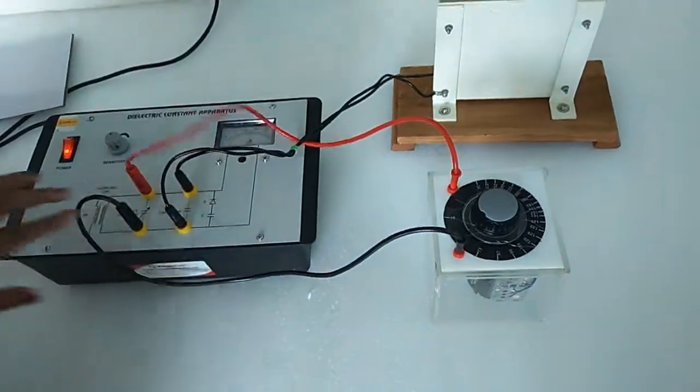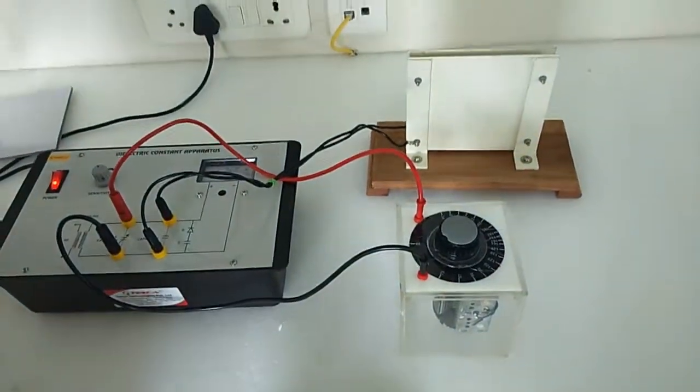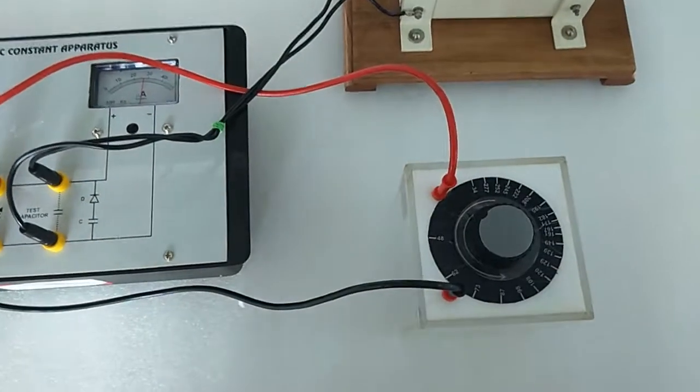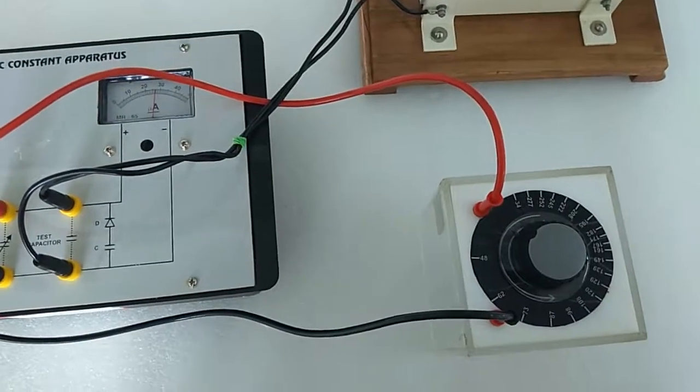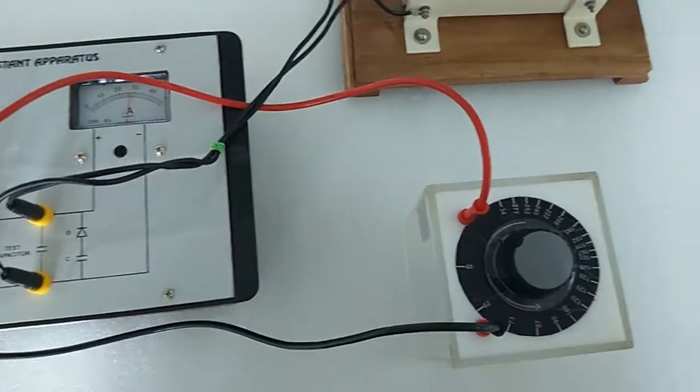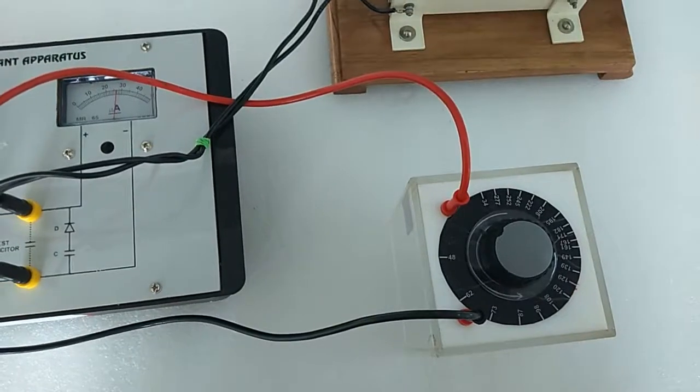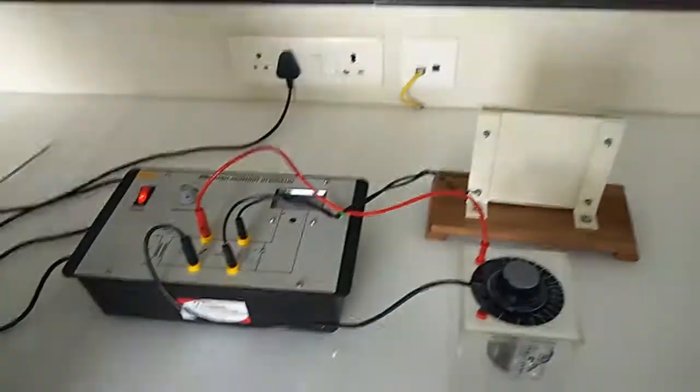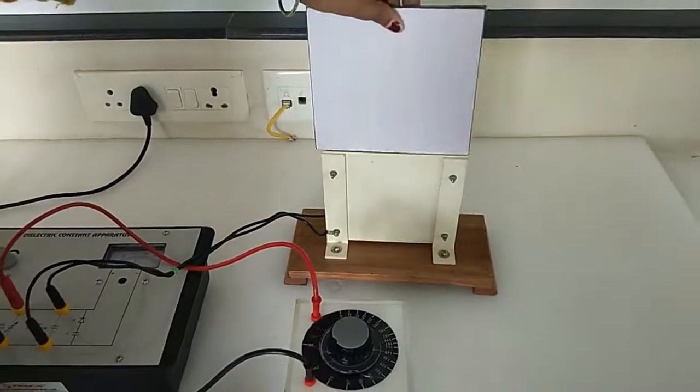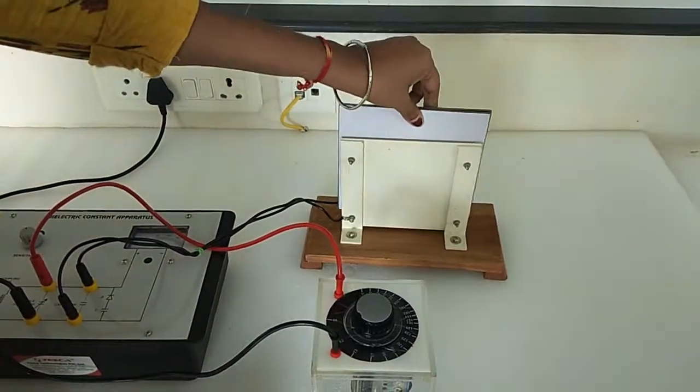This is the resonance point. Now leave the variable gang capacitor. Note down the value of the capacitor at which this deflection happens. This is the value of c1. Insert the dielectric plate to the test capacitor.